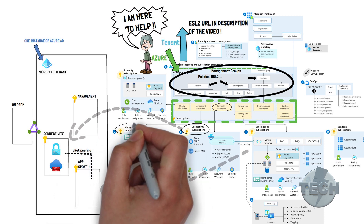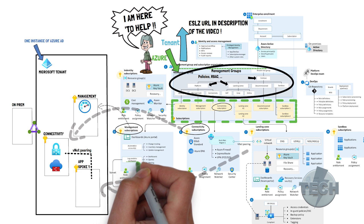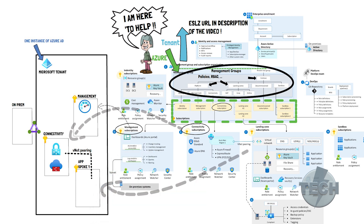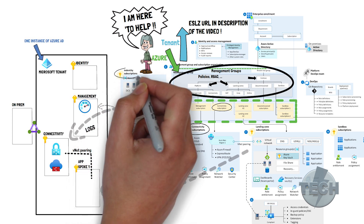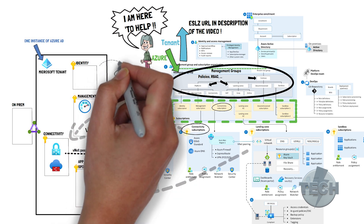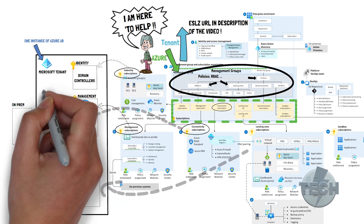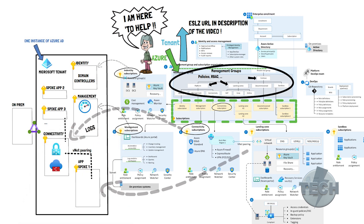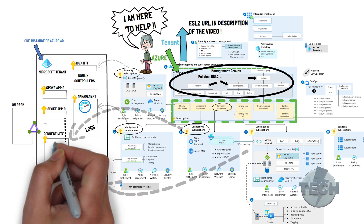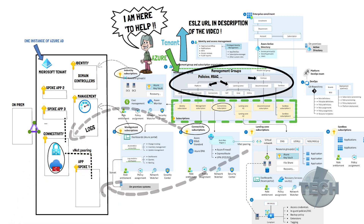You will then want a management subscription. That's where you, for example, have a central log analytics workspace, and all your automation accounts are placed here. So logs from all other subscriptions will be stored and enter this central place. We can then add an identity subscription. That's where you would place any Windows Active Directory domain services servers. The actual infrastructure behind this setup is in what we call different spoke subscriptions. Let's say you want to deploy an application — you then create a separate subscription just for that one application and pair it to the connectivity hub, so all applications behind this connectivity hub can use all those shared services.